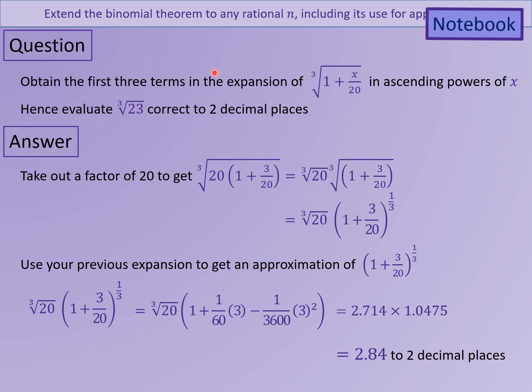That gives 2.714 times 1.0475, which gives an answer of about 2.84 to two decimal places. If you typed that into your calculator you'd notice it's very similar. And that's how you use the expansion tool — this binomial expansion — to actually get the answer they want rather than just using your calculator.